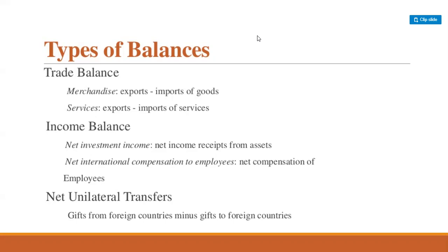Next, we discuss unilateral and unrequited transfers to and from abroad. Unilateral transfers include gifts, donations, personal remittances, and other one-way transactions. These refer to receipts and payments which take place without any service in return. Receipts of unilateral transfers from the rest of the world are shown on the credit side, and unilateral transfers to the rest of the world on the debit side.